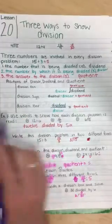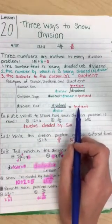And with the division bar, you have the dividend on top, the divisor on the bottom, and the quotient over here.